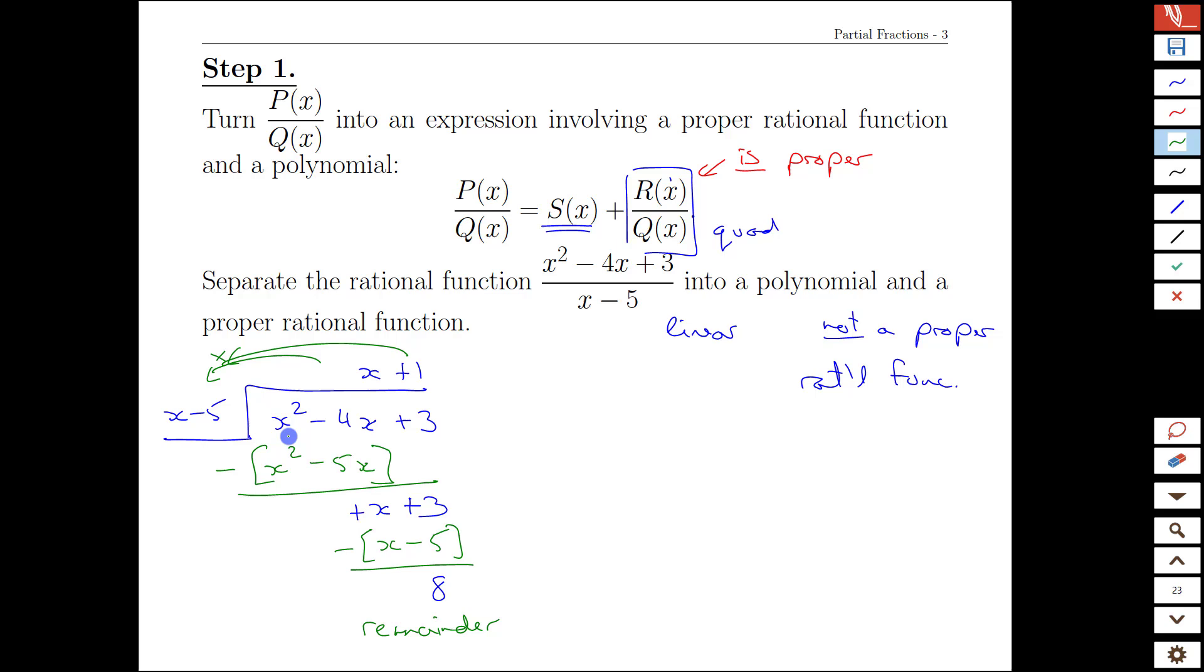When we take this large term in the numerator and divide it by x minus 5, so our x squared minus 4x plus 3 over x minus 5 is exactly equal to what we get when we divide, x plus 1, plus the remainder 8 over x minus 5 as well. And now we get this expression here, which is a proper rational function, plus some stuff that's not even a rational function anymore.